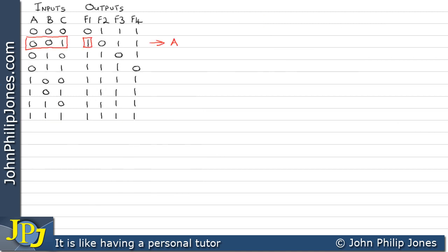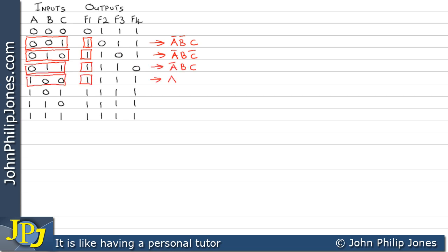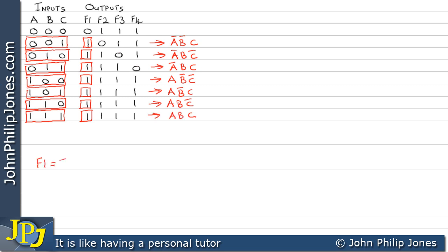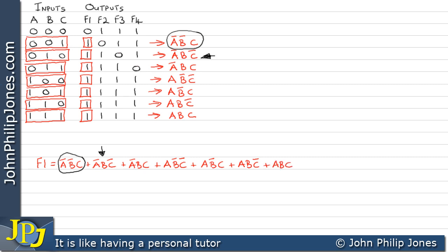I've moved the truth table to derive the sum of minterms for F1. This means identifying where there's a 1 in the F1 column, looking at the inputs and producing the appropriate minterm at each point. You need to look back at previous videos in the playlist to remind yourself how to do this. What we end up with is F1 expressed as the sum of all those minterms, which means we take each minterm in turn and OR them together.